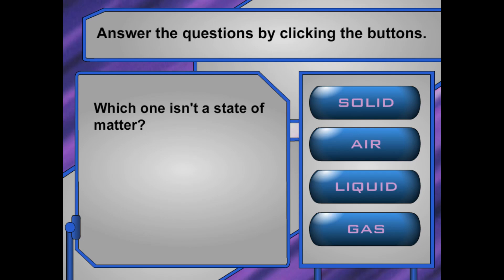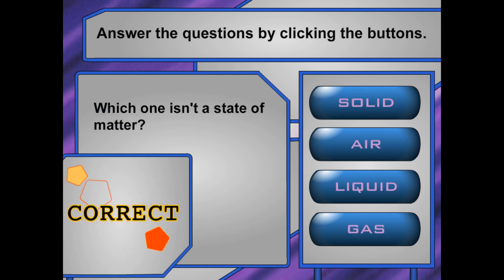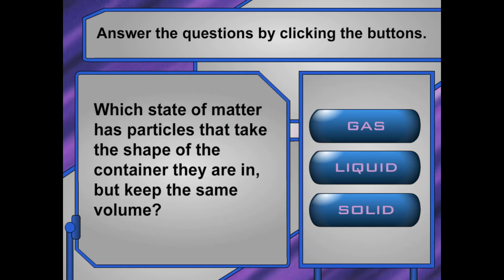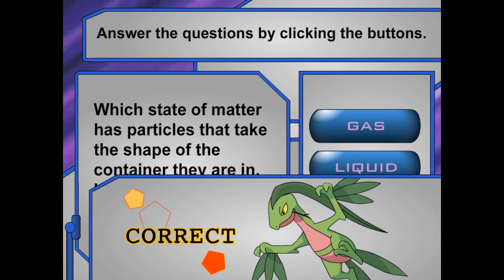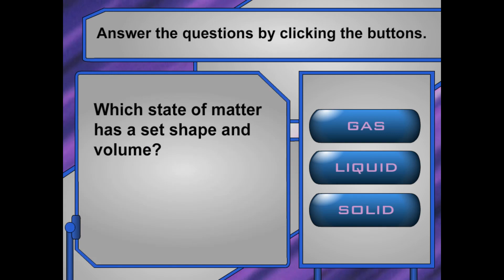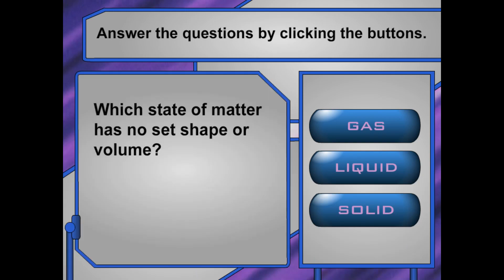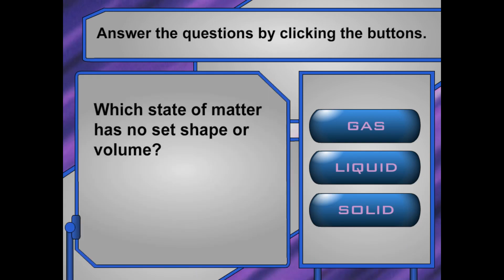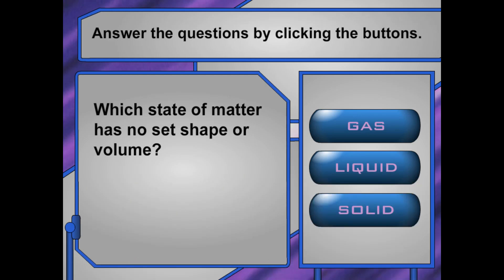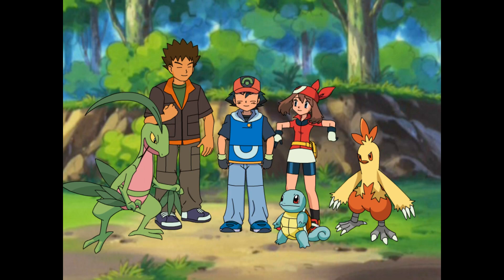Now tell me, which one isn't a state of matter? You got it! Which state of matter has particles that take the shape of the container they are in, but keep the same volume? Yeah! Which state of matter has a set shape and volume? All right! Which state of matter has no set shape or volume? Awesome! All right!